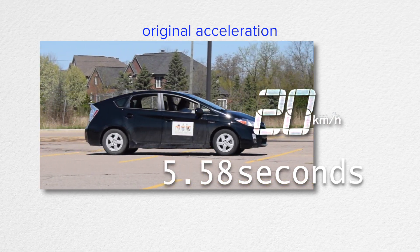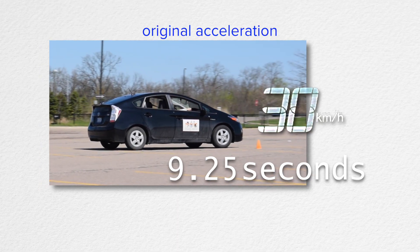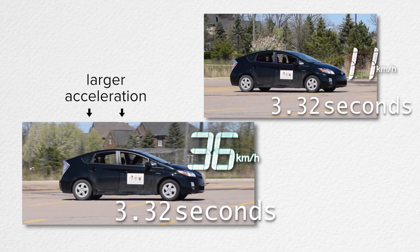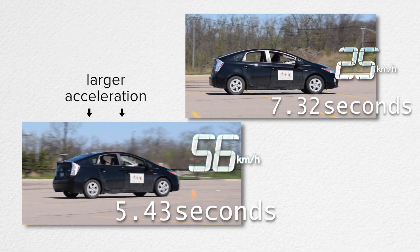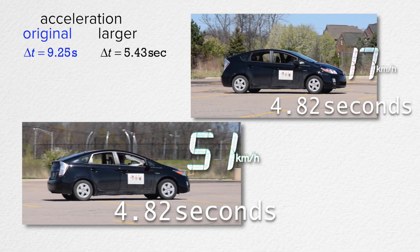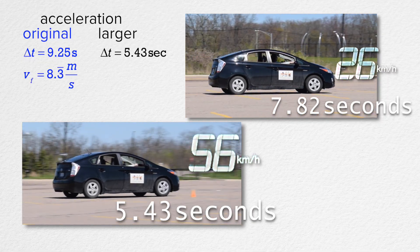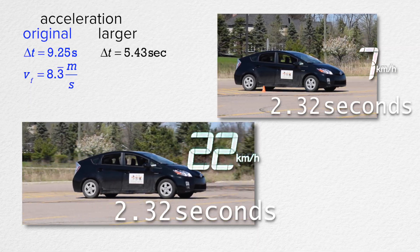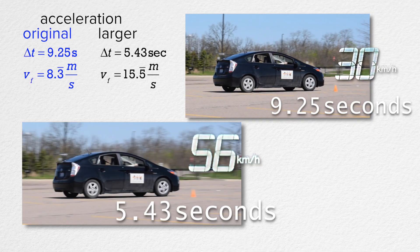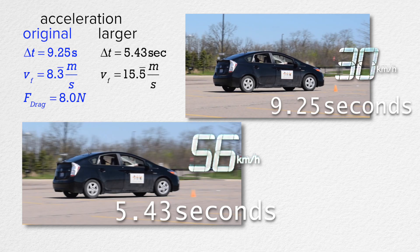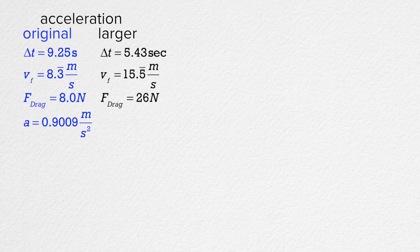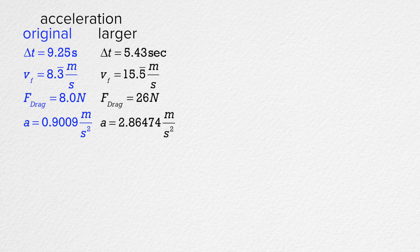You know what? Let's quantify my horse poop analogy. In the original example, I pressed very gently on the accelerator pedal and it took 9.25 seconds to travel 42 meters. If, instead, I slammed the accelerator pedal all the way down, it only takes 5.43 seconds for the car to travel the same distance. The original final velocity was 30 kilometers per hour, 19 miles per hour, or 8.3 meters per second. The new final velocity is 56 kilometers per hour, 35 miles per hour, or 16 meters per second. The original average force of drag acting on the car was 8.0 newtons. Now, it is 26 newtons. The original acceleration was roughly 0.9 meters per second squared and the larger acceleration is about 2.9 meters per second squared.